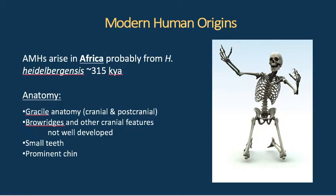What's going on in Africa during this time? We have anatomically modern humans appearing in Africa somewhere around 315 to 330,000 years ago, most likely from a local heidelbergensis population living in Africa at the time.